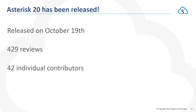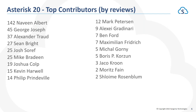Asterisk 20 has been released — it was actually released on October 19th. A few people have reached out to say they've updated to Asterisk 20 and it has gone smoothly with no issues. If you are upgrading any version of Asterisk, be sure to look at the upgrade.txt document and the changes document. The changes document tells you general changes, and upgrade.txt is really important because it will tell you things that may impact or break you. For Asterisk 20, we had 429 reviews and 42 individual contributors, with the number one contributor being Naveen Albert, the second being George Joseph, and the third being Alexander Trodd.